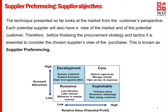As we all know, every supplier will have their own objectives and targets that they need to meet. Therefore, it is very important as responsible customers that we understand those objectives, so the outcome will be a win-win. Before finalizing a procurement strategy or a tactic, it is very important that we consider the chosen supplier's objectives. This is known as supplier preferencing.